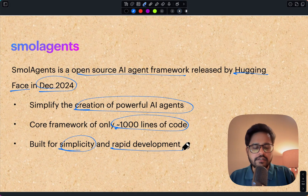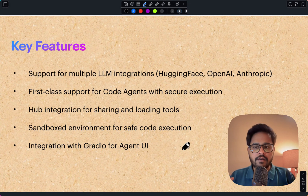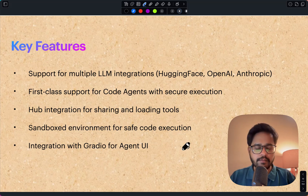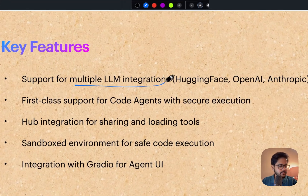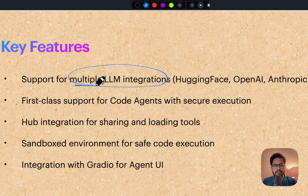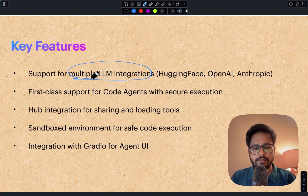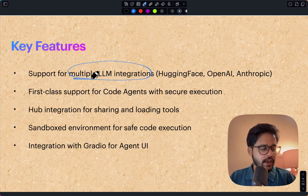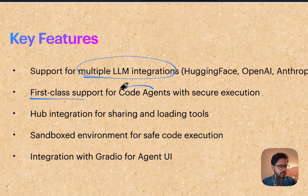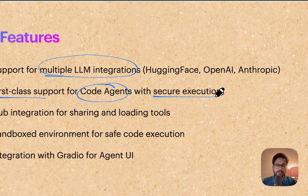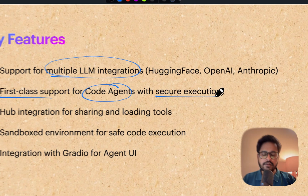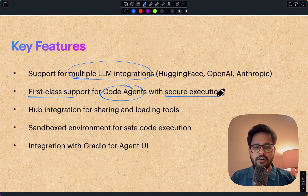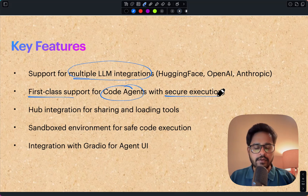Some key features present in this library: like many agent frameworks, smolagents supports different LLM integrations starting from Hugging Face, OpenAI, LangChain, and so on. It also has first-class support for a code agent with secure execution, which is interesting — you can create a code agent within Hugging Face without having to input a code interpreter separately.